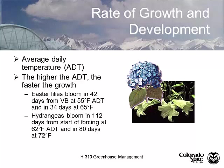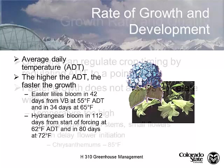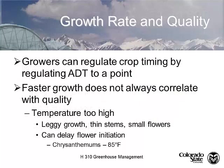Student asks: What's the max temperature for Easter lilies? If you get the temperature too high in Easter lilies you'll have leggy growth, thin stems, small flowers, and possibly delayed flower initiation. For chrysanthemums, day temperatures greater than 85 degrees actually causes something called heat delay, slowing your crop down by exactly one week.